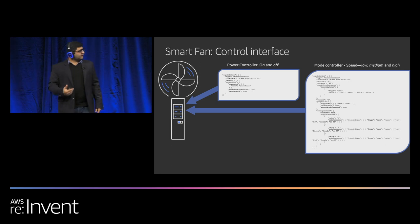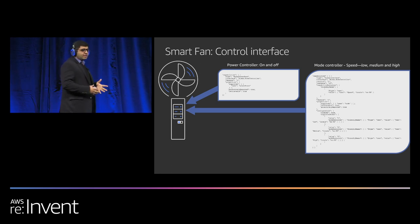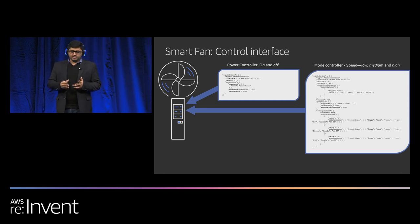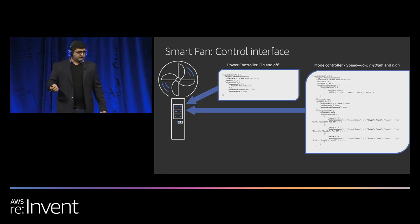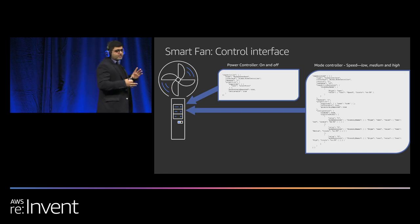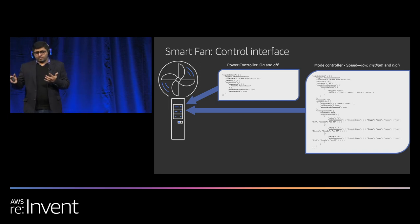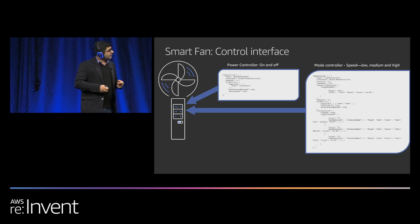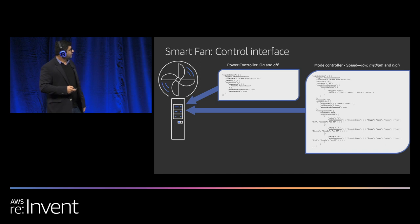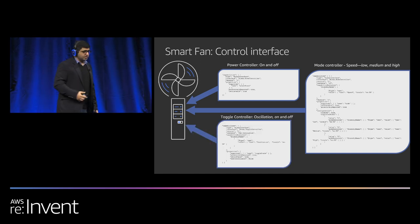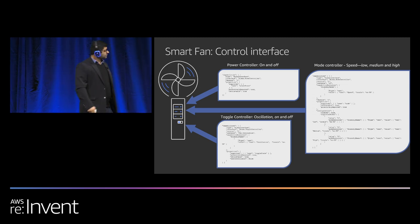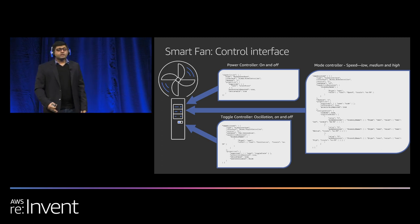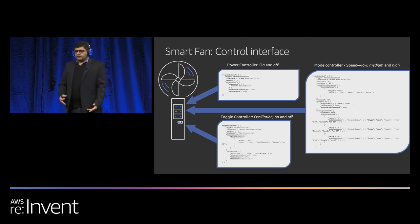The second controller is speed. Something we introduce is a capability name — I can call this capability speed or wind speed. So if I say set speed to low or set wind speed to low, I can create multiple synonyms for speed and that defines my voice interface. The same thing goes with low — I can call it lowest or minimum. For the toggle controller, I specify oscillation — you can also call it rotation — and define utterances like set oscillation to on or set rotation to off, which defines the voice interface.